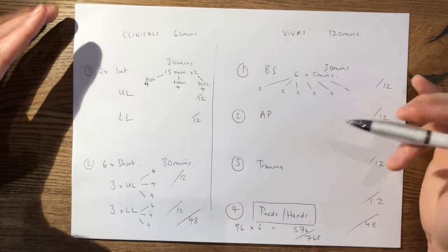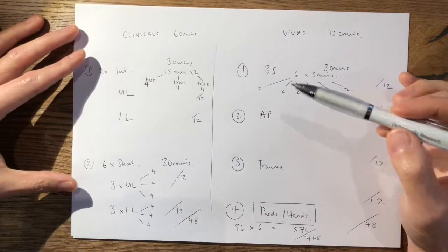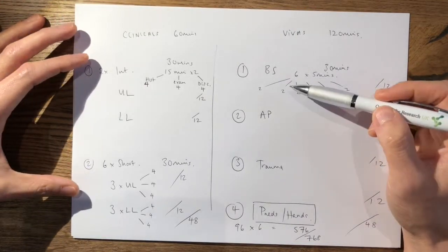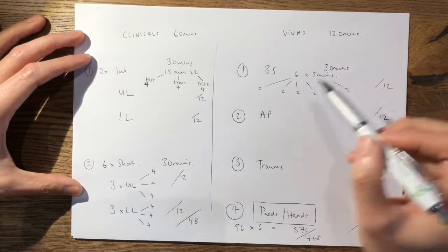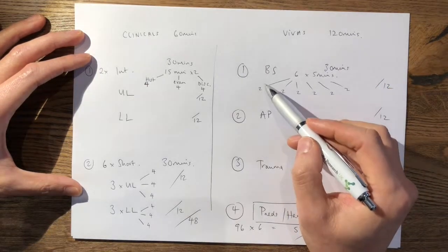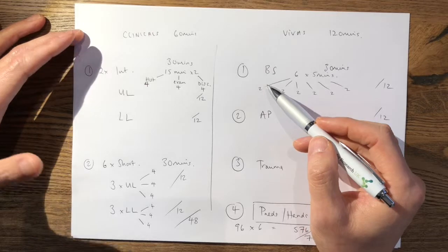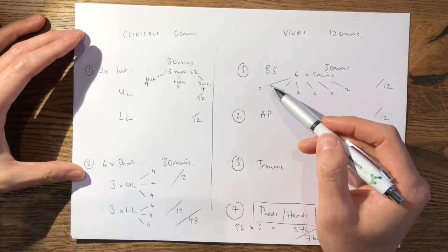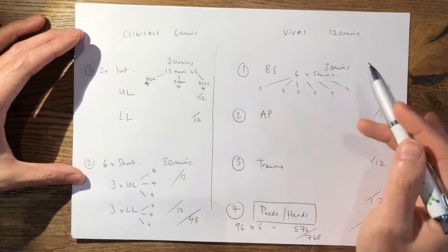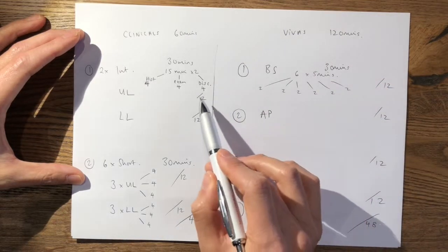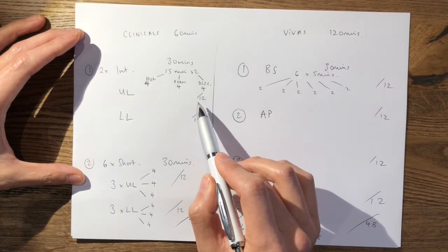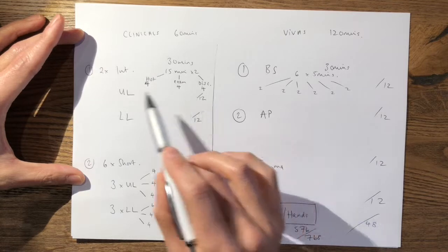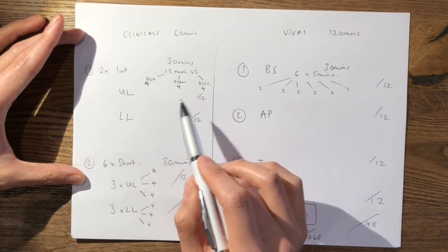The reason it's important to understand this is because if you have a bad station in your viva in one of the questions, you only mess up two scoring opportunities, and at worst really you'll probably just get a five. But the wider picture is that that's only a sixth of the amount of scoring opportunities that you have in one of your intermediate cases in your clinicals.